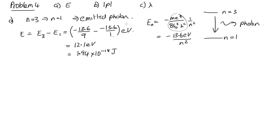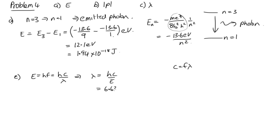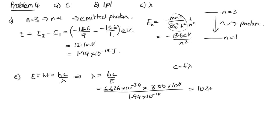That's part A. For part C, λ = hc/E = (6.626×10⁻³⁴ × 3×10⁸) / (1.94×10⁻¹⁸) = 102×10⁻⁹ m = 102 nm. It's easier to calculate the wavelength before the momentum.